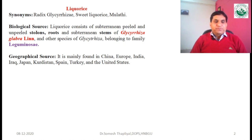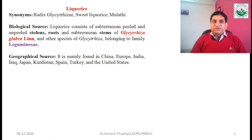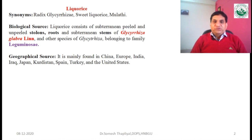The biological source of Lycoris: the useful parts are the stolons, roots, and stems. The botanical name is Glycyrrhiza glabra, belonging to the family Leguminosae. Lycoris consists of subterranean peeled and unpeeled stolons, roots, and subterranean stems of Glycyrrhiza glabra and other species of Glycyrrhiza. Geographically, it is mainly cultivated in China, Europe, India, Iraq, Japan, Kurdistan, Spain, Turkey, and the United States.